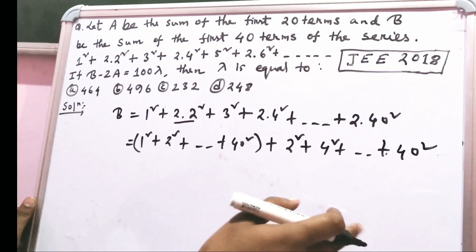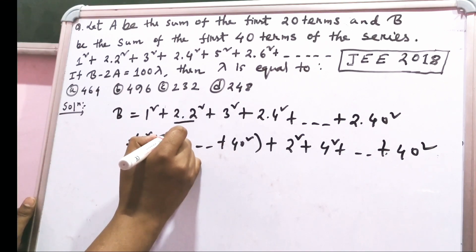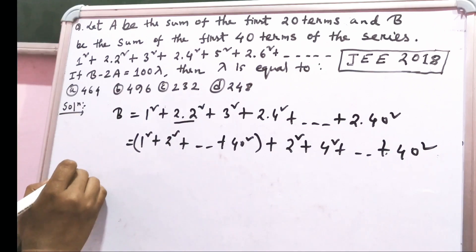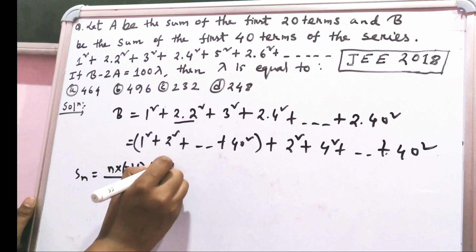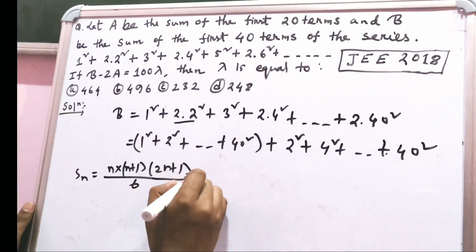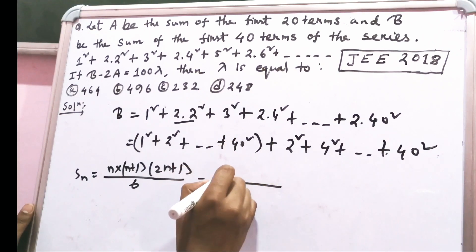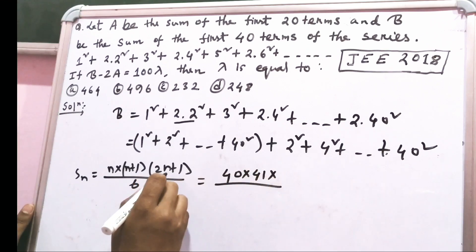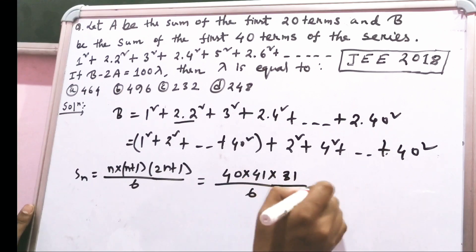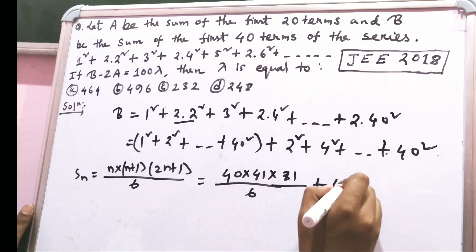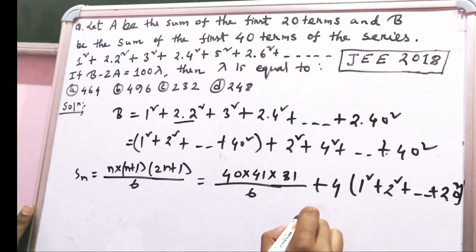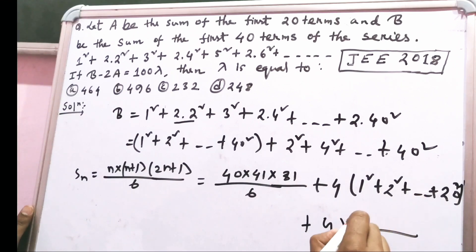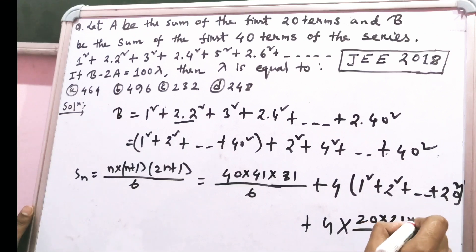We apply the formula for the sum of squares: Sₙ = n(n+1)(2n+1)/6. For the first part, n = 40, giving 40·41·81/6. For the second part, taking 4 as common, it becomes 4 times the sum of squares up to 20², i.e., 4 into 20·21·41/6.